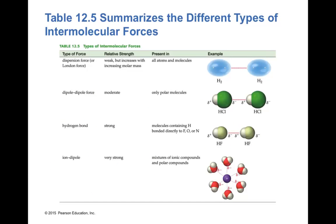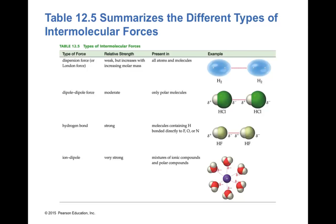Summarizing the types of intermolecular forces: dispersion forces are weak and occur in all atoms and molecules. Dipole-dipole forces are moderate in strength and are present only in polar molecules. Hydrogen bonds are strong and occur when hydrogen is bonded directly to oxygen, fluorine, or nitrogen. Ion-dipole forces are very strong and involve the interaction between ions of an ionic compound and the polar ends of a polar molecule.